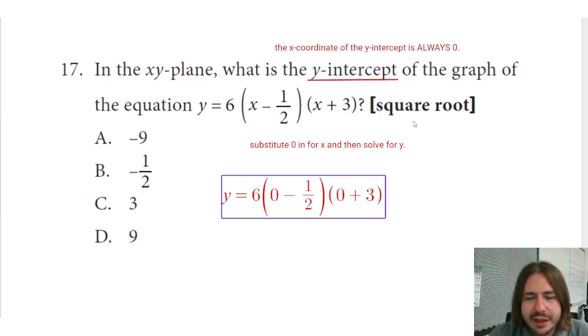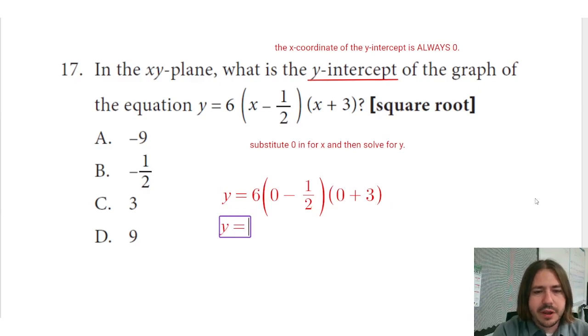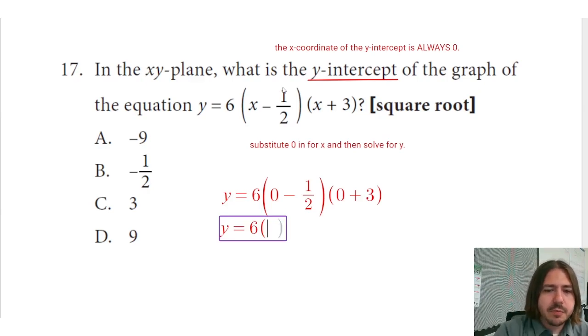You don't even need anything that complicated because all we're doing is just evaluating. So you could plug in this whole thing in your calculator. Honestly, you probably don't even need a calculator, although I would suggest you use it anyway just to make sure you don't make an arithmetic error. That 0 minus 1/2 is just going to be negative 1/2. 0 plus 3 is going to be 3.